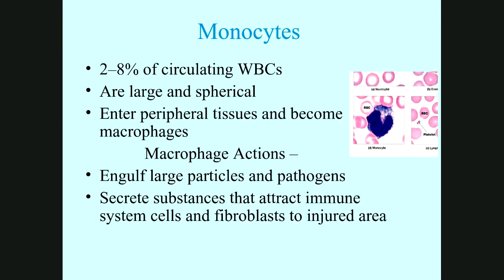Monocytes represent two to eight percent of the circulating white blood cells. They are very large. They can become macrophages when they enter the peripheral tissue, and their macrophage action includes engulfing large particles and pathogens, and secreting substances that attract immune system cells and fibroblasts to the injured area.